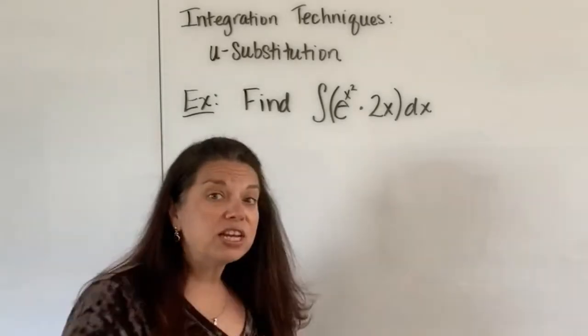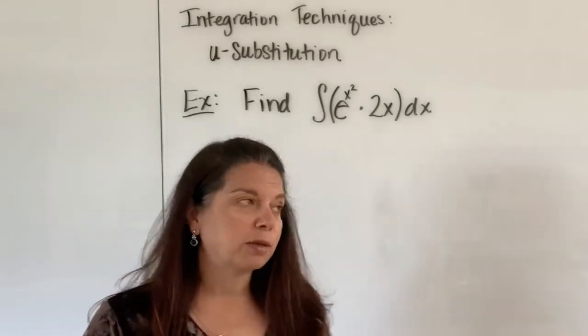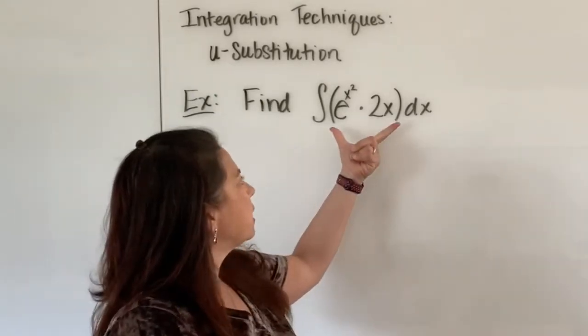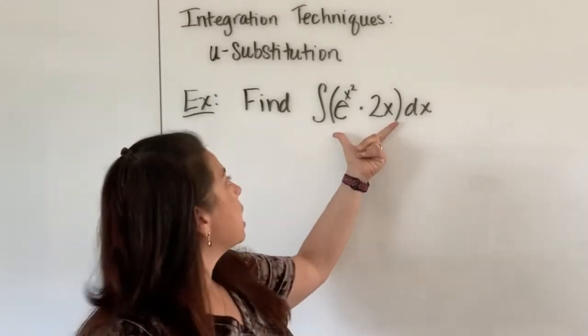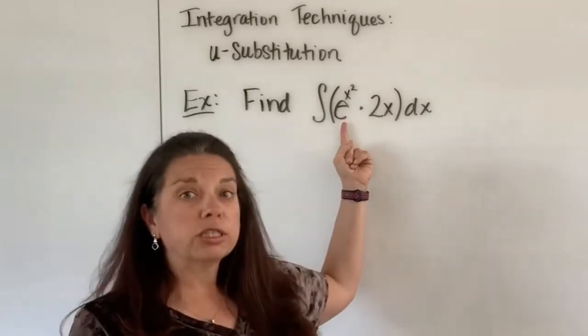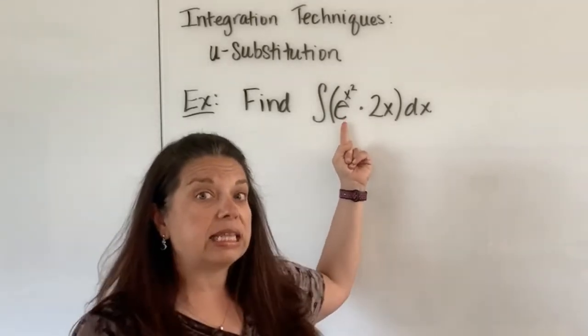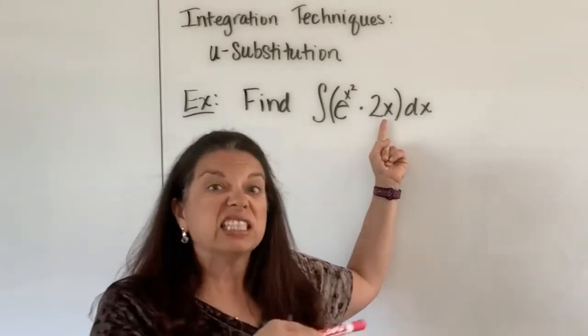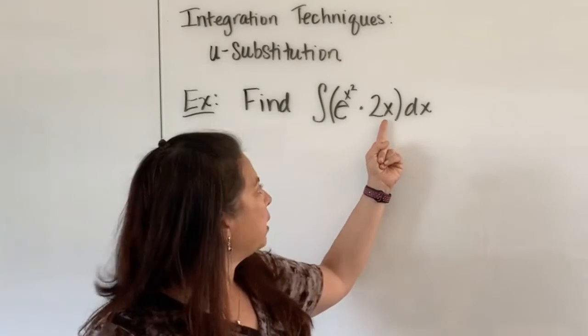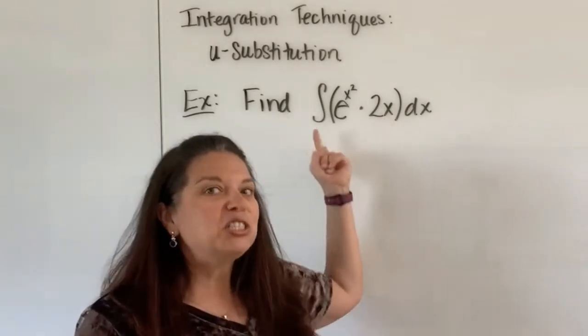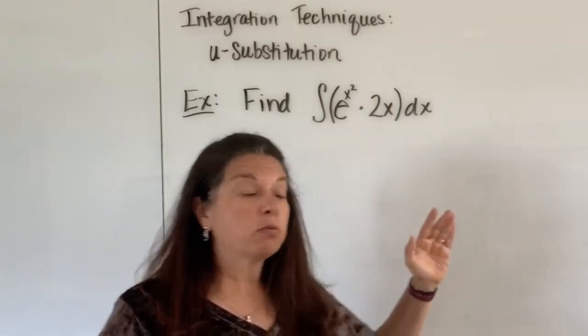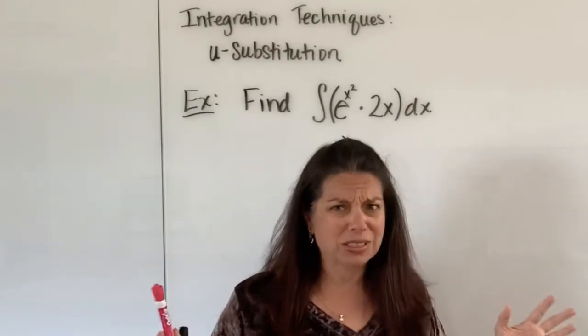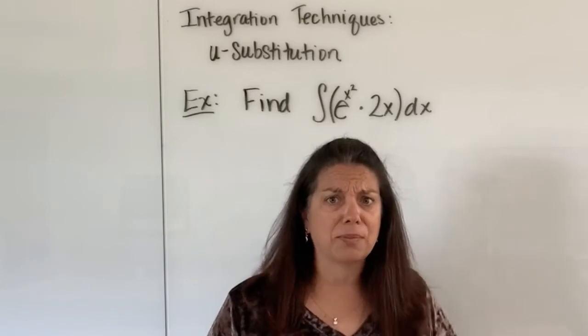In the last video where I showed the notation of u-substitution, I wanted to point out that the integrand here is going to be some function's derivative maintaining the inside function as is, multiplied by that inside function's derivative. When you're first starting out on these problems it's a little more difficult to see the setup and the pattern that emerges.